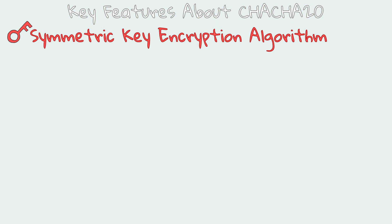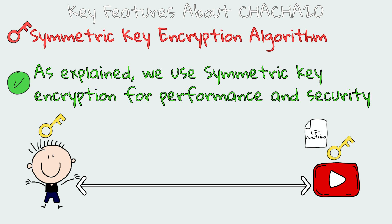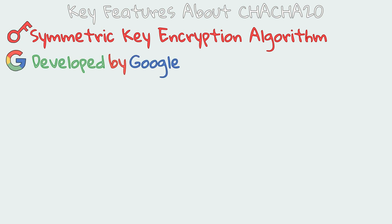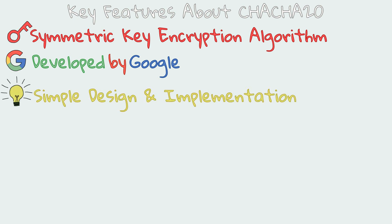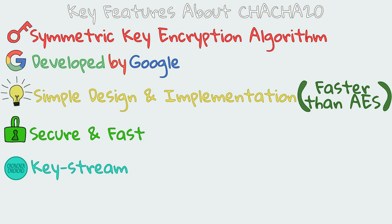Let's see at a high level how this AEAD cipher works. ChaCha20 is a symmetric key encryption algorithm — of course it should be symmetric because we use symmetric key encryption for data encryption for performance reasons, and also because it's still as secure as asymmetric key encryption. ChaCha20 was developed by Google, and is known for its simple design and implementation, making it faster than AES. It is also known for its security and high speed. It generates a stream of pseudo-random bits called the key stream, which is then XOR'd with the plaintext to produce the ciphertext. ChaCha20 is also widely supported.